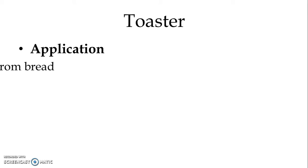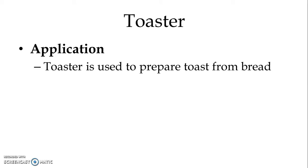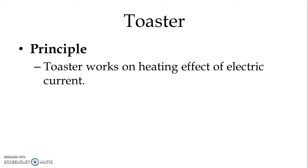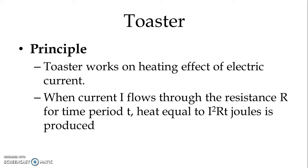We use a toaster to prepare a toast from the bread, and the principle behind the working of the toaster is the heating effect of electric current. When current I flows through the resistance R for a period of T, heat equal to I²RT joules is produced, and this heat we use to bake the slice of bread.